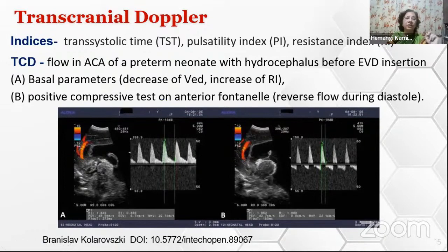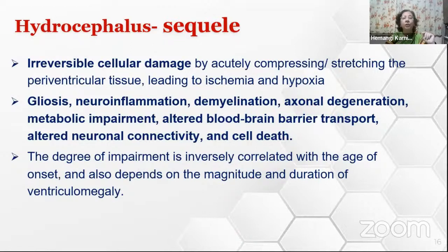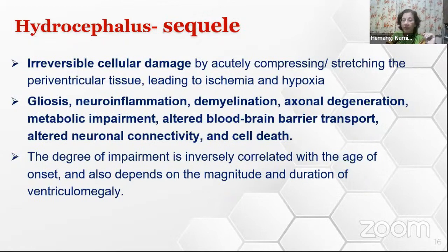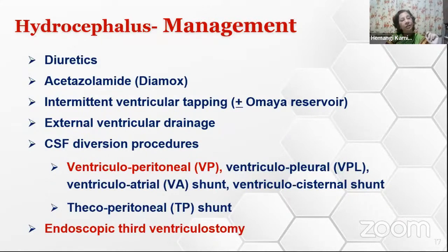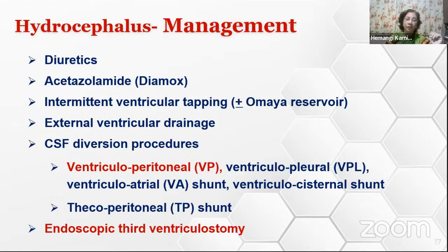If not treated, there can be irreversible cellular damage due to gliosis, neuroinflammation, demyelination, axonal degeneration, metabolic impairment, altered neuronal connectivity, and even cell death—so it should be treated at the earliest. Initially, diuretics and acetazolamide may be useful; however, surgical drainage of CSF is required. As a temporizing measure, intermittent ventricular tapping or external ventricular drainage can be used. For permanent management, CSF diversion procedures—most commonly ventriculoperitoneal shunt and less commonly ventriculopleural, ventriculoatrial, or thecoperitioneal shunt—may be used. Alternatively, endoscopic third ventriculostomy can also be done.